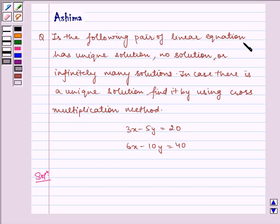Does the following pair of linear equations have a unique solution, no solution, or infinitely many solutions? In case there is a unique solution, find it by using the cross multiplication method.